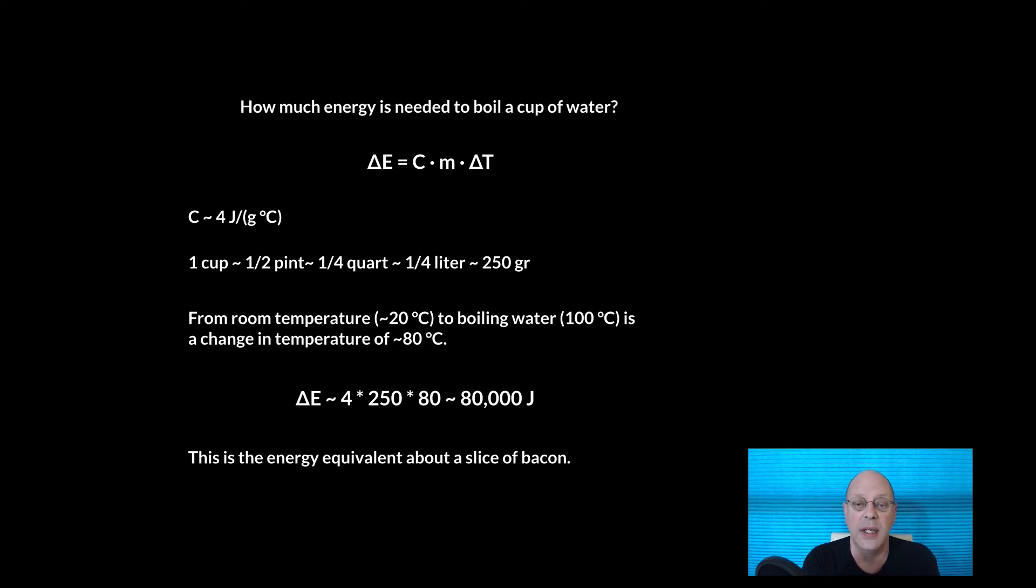Well, we write down our formula. So delta E, the change in energy, is the heat capacity, C, times the mass, M, times the change in temperature, delta T. And so now we start hunting around or estimating values for the various quantities in the right-hand side of this equation. So we know the heat capacity. This is about 4 joules per gram per degree C. We talked about this. It's also on the useful numbers and handy formula sheet.